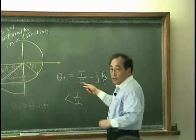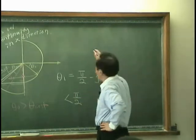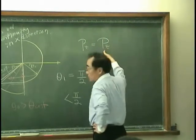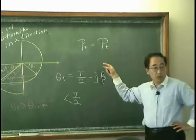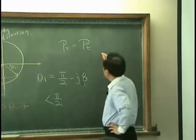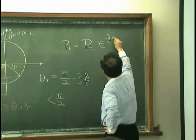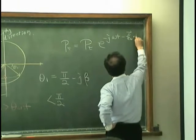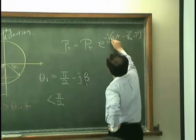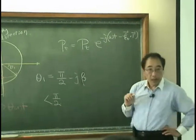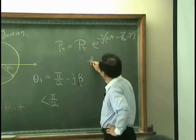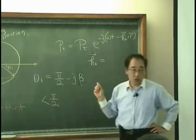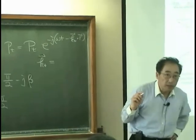That means what? For transmitted wave that we can write, that has magnitude. And that is propagating. And the KT vector has two components in x and y direction.